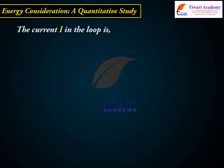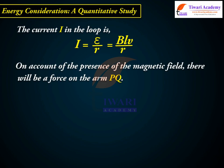The current I in the loop is I = ε/R = BLV/R. On account of the presence of the magnetic field, there will be a force on the arm PQ.